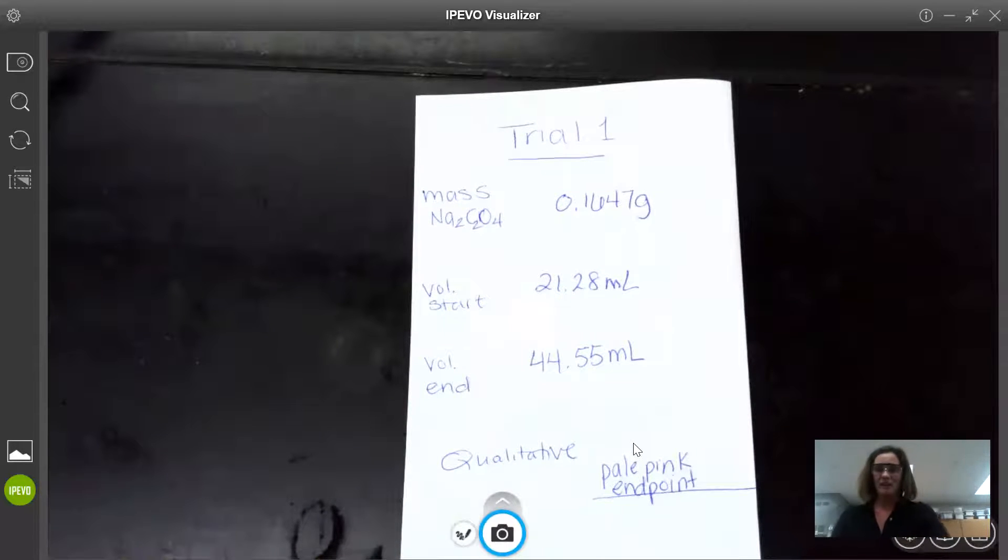So at this point, a student would go on to collect trial two and if those first two trials weren't in good agreement, they would go on to titrate trial three. So right now I'm going to provide you with some data from trial two so that you can proceed with calculations three and four in the lab.